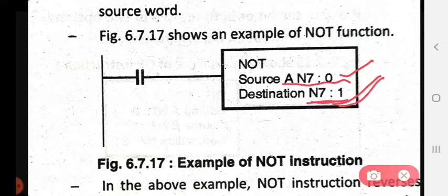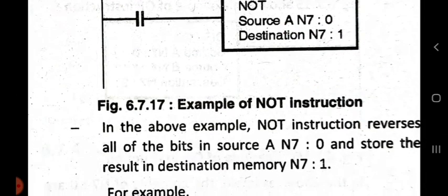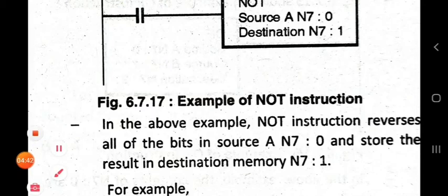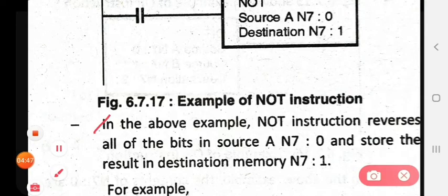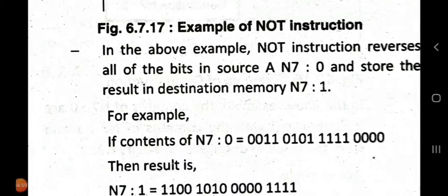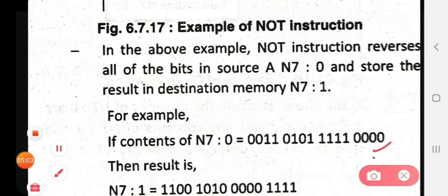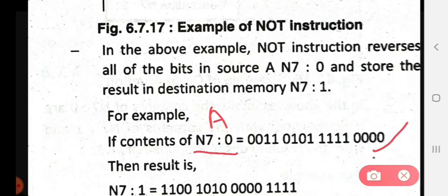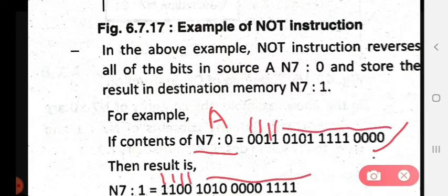In the above example, the NOT instruction reverses all of the bits in the source n7s-to-zero and stores the result in the destination memory n7s-to-one. For example, the content in n7s-to-zero is our source. Using the NOT instruction, zero becomes one, zero becomes one, one becomes zero, one becomes zero — and so on for all remaining bits.